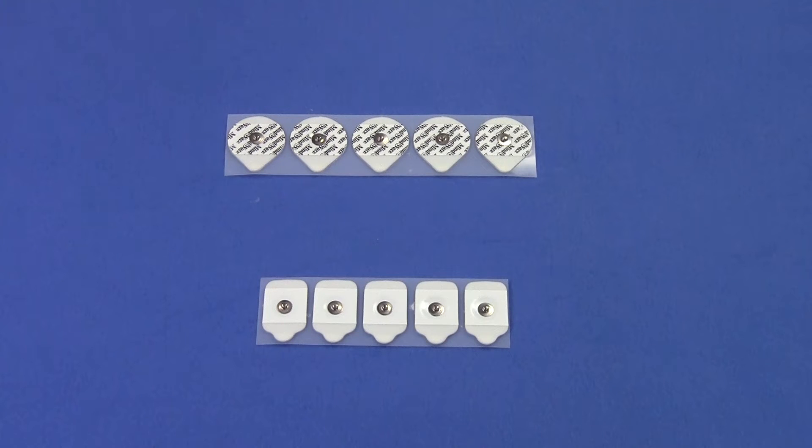Also note that GSC electrodes are different from those used for ECG or impedance cardiography. They're rectangular in shape and contain a different concentration of conductive gel.